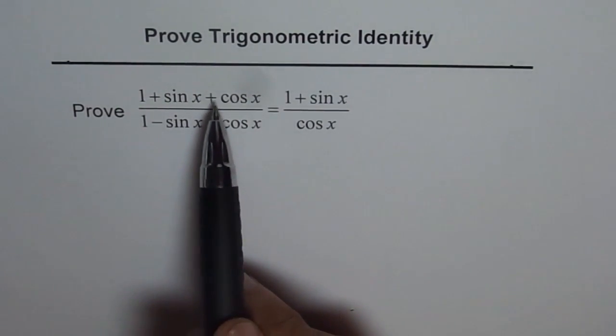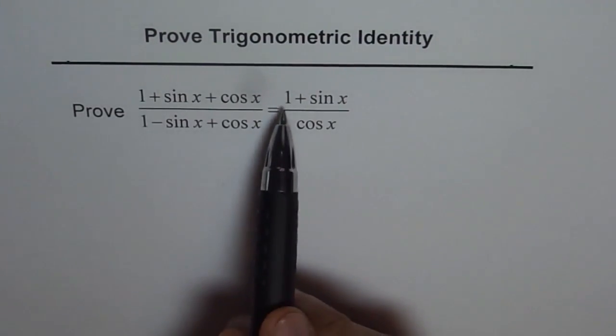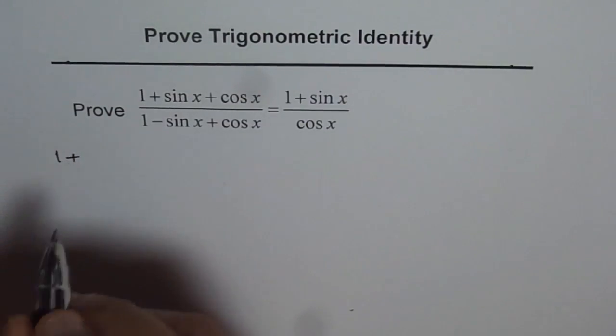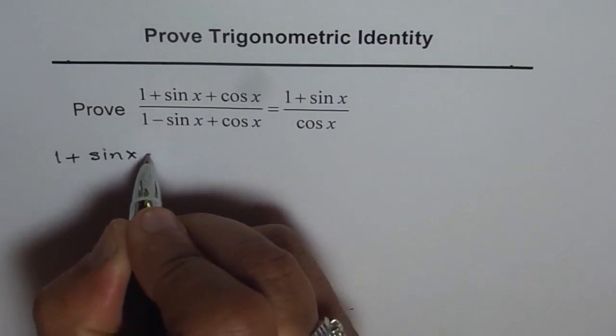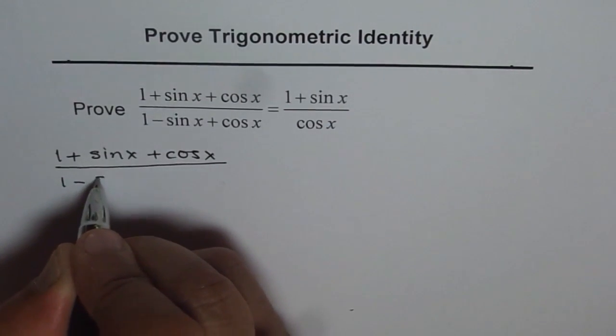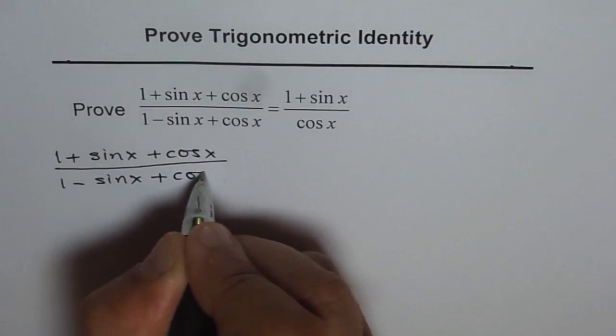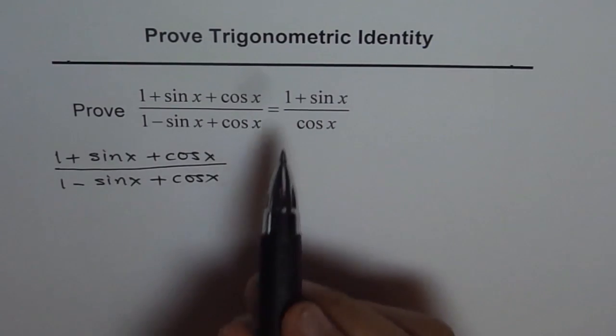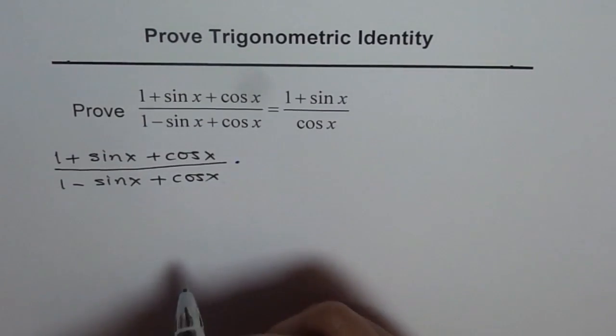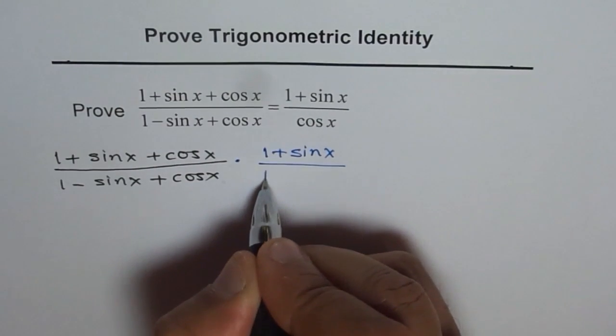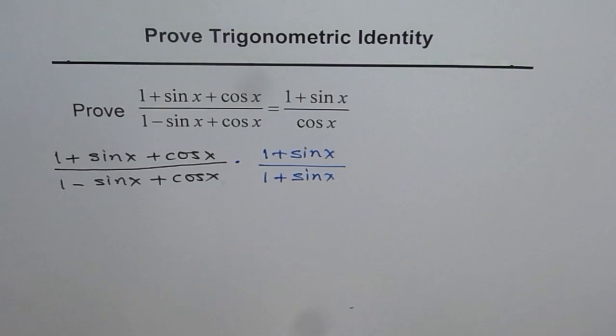Let's start with the left side, which is (1 + sin x + cos x) divided by (1 - sin x + cos x). The strategy is that we need (1 + sin x), so let's multiply this by (1 + sin x) divided by (1 + sin x). As good as multiplying by 1, you can always do it.